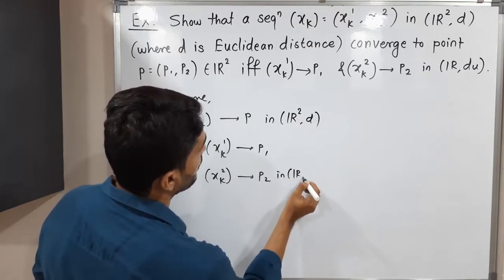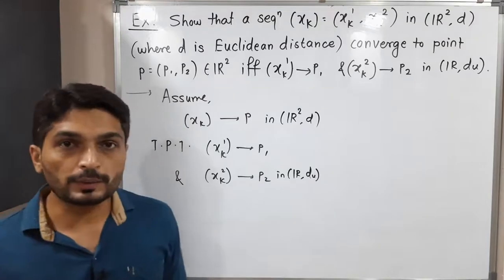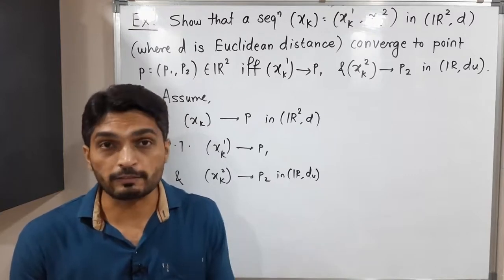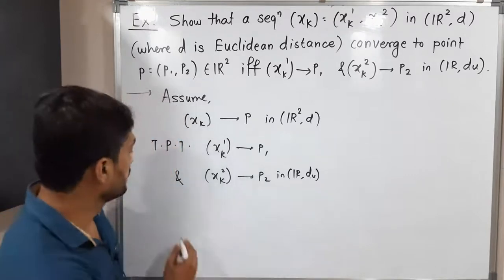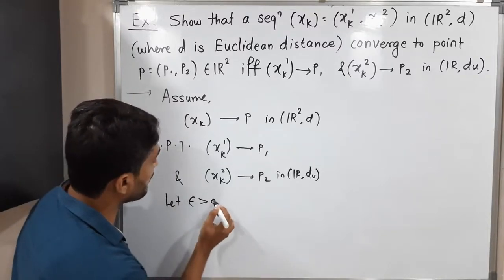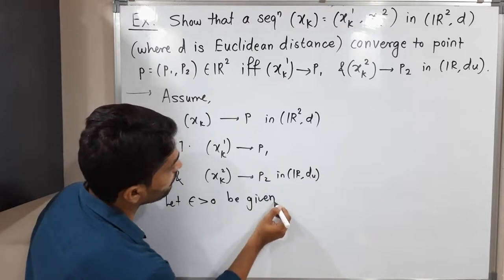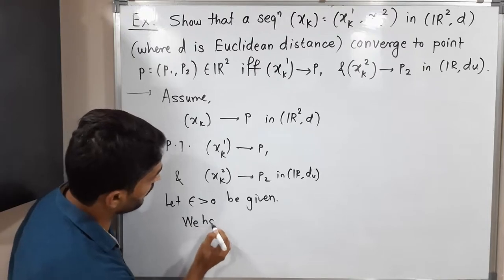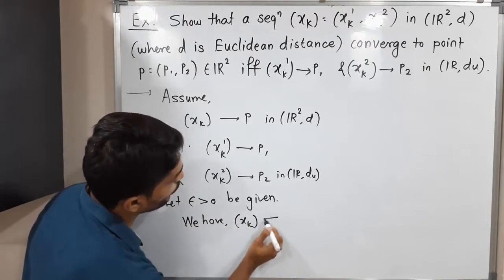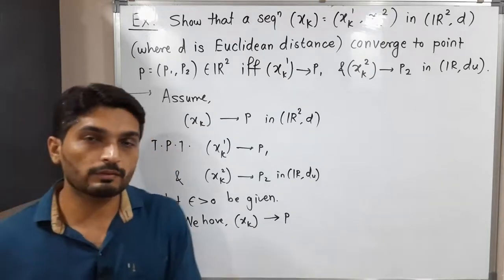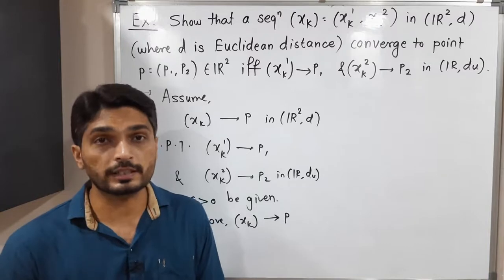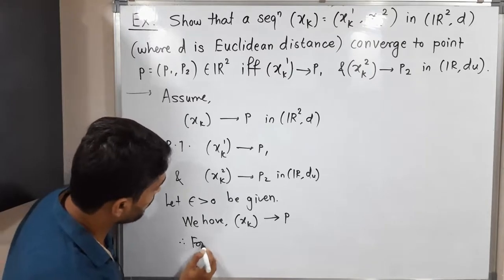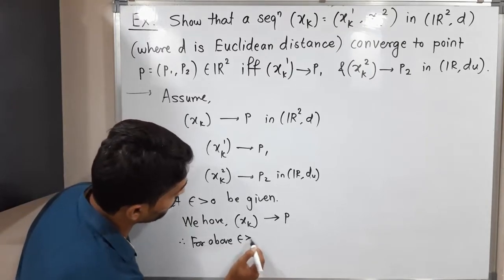We are familiar with the definition of a convergent sequence using the epsilon-N definition. Let epsilon greater than zero be given. We will use the given information: since xk converges to point p, for the above epsilon greater than zero there exists N belonging to the set of natural numbers.